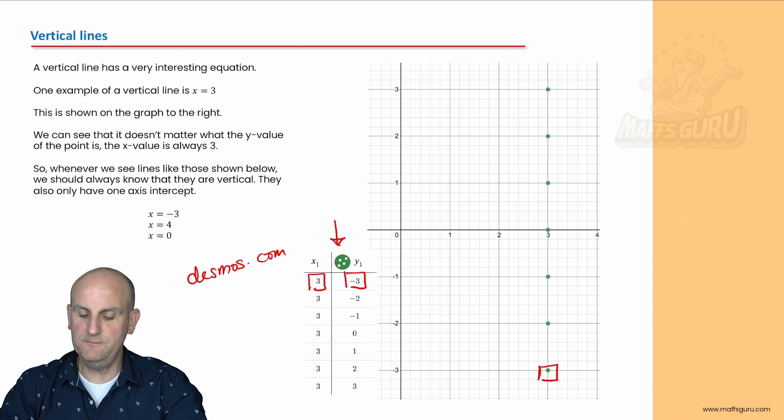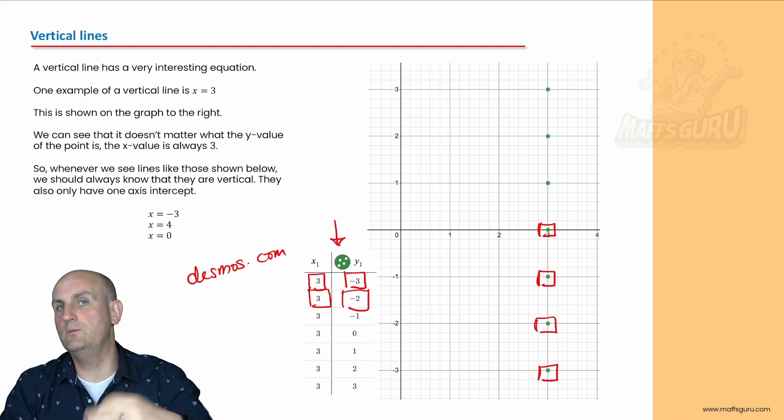3 across and 2 down puts me at that point there. 3 across 1 down puts me at that point there. Now if I write these in a slightly different way using coordinates, I wonder if you're going to work out what the equation of this line is.